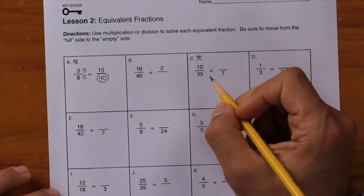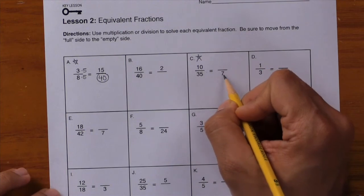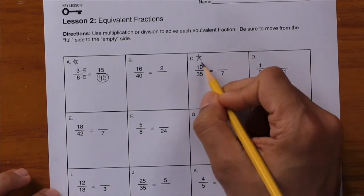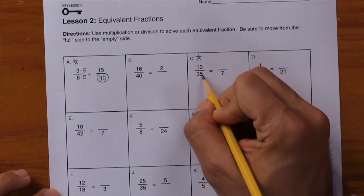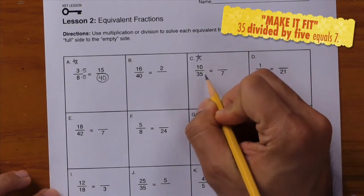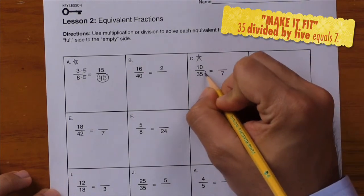Next example, take a look at letter C. Here we have 10 over 35 equals blank over 7. So go from the full side to the empty side. How did you get from 35 to 7? Well, since it's getting smaller, I know I'm going to use division, so I'm going to divide by 5.